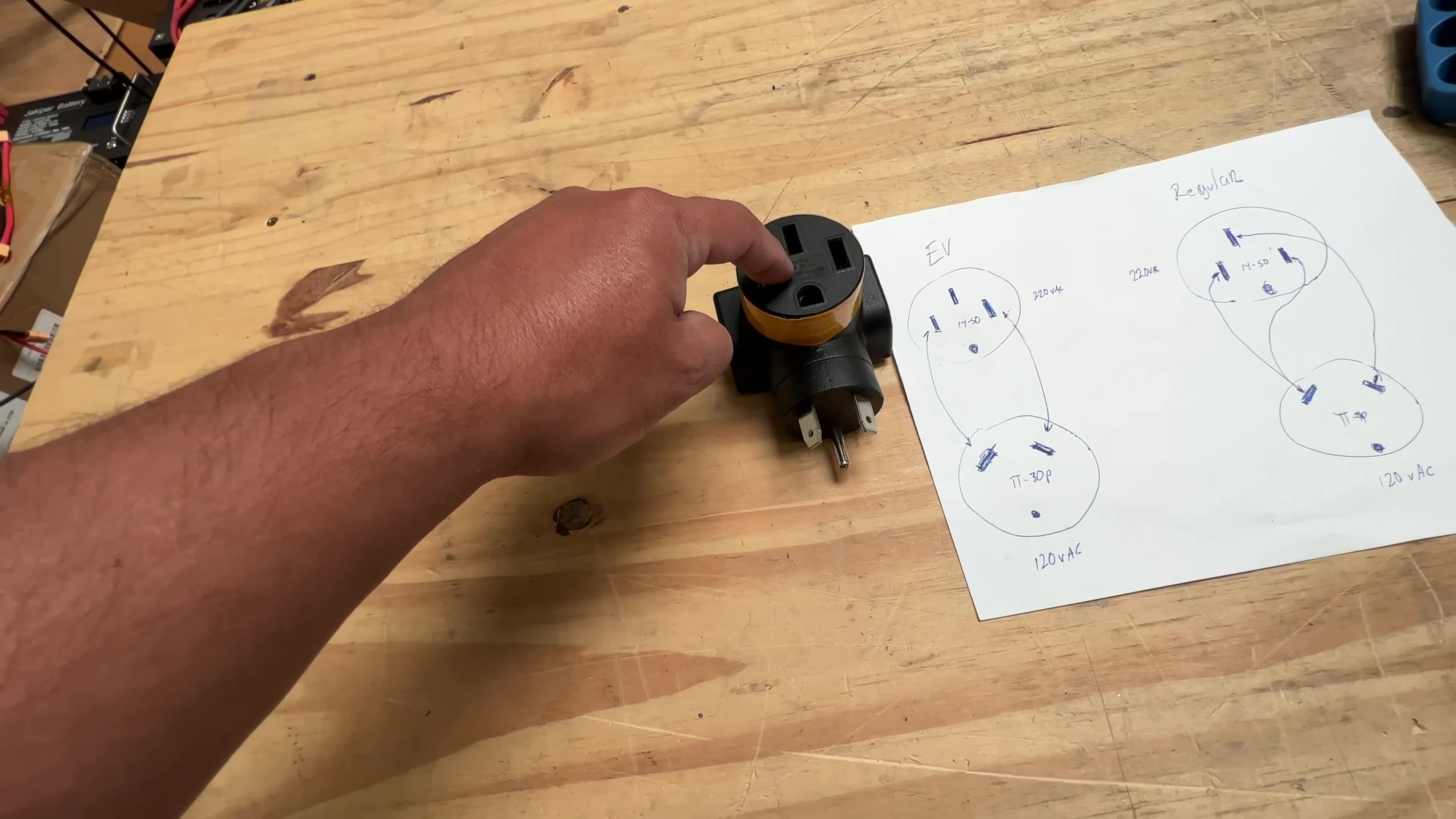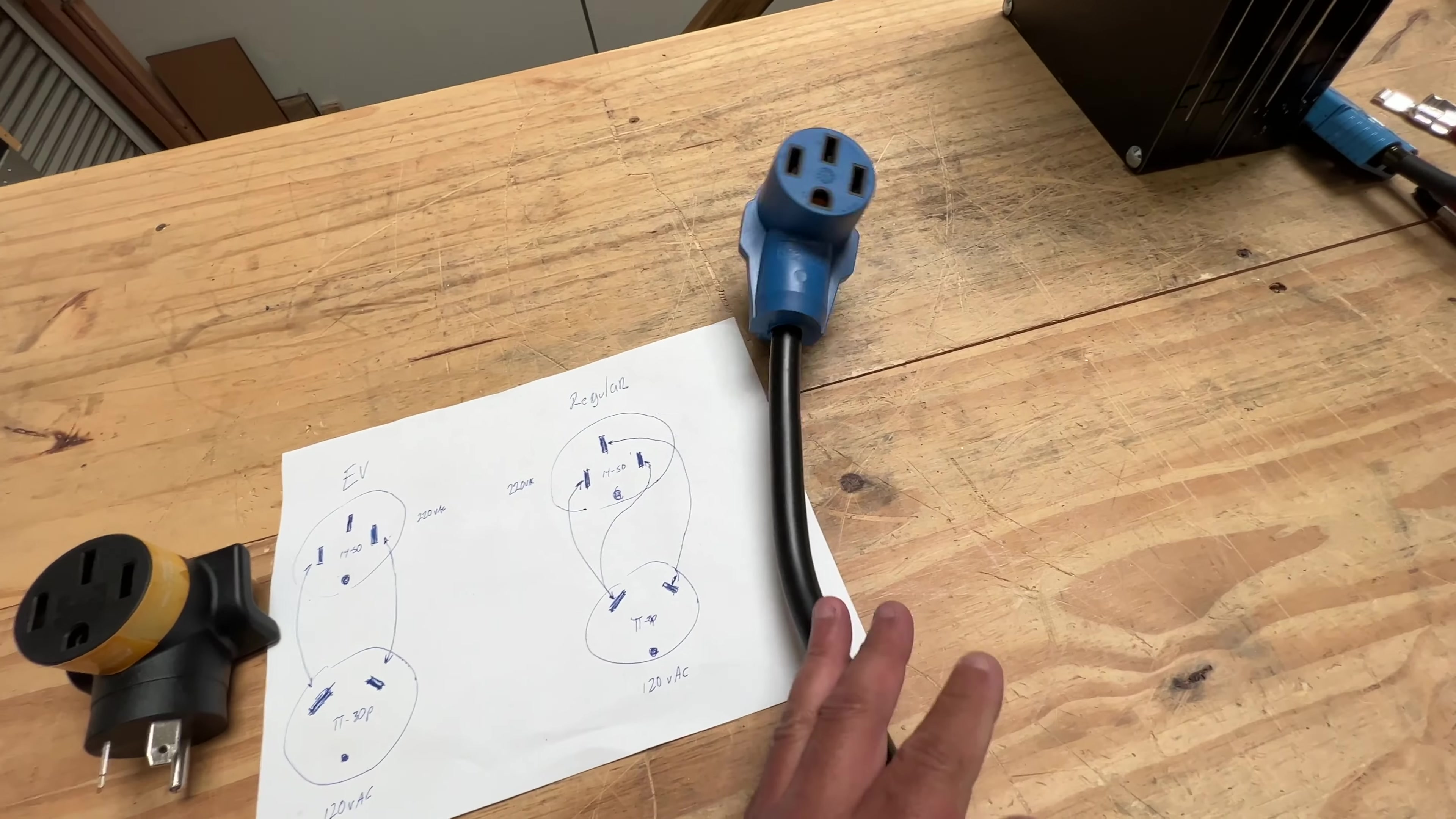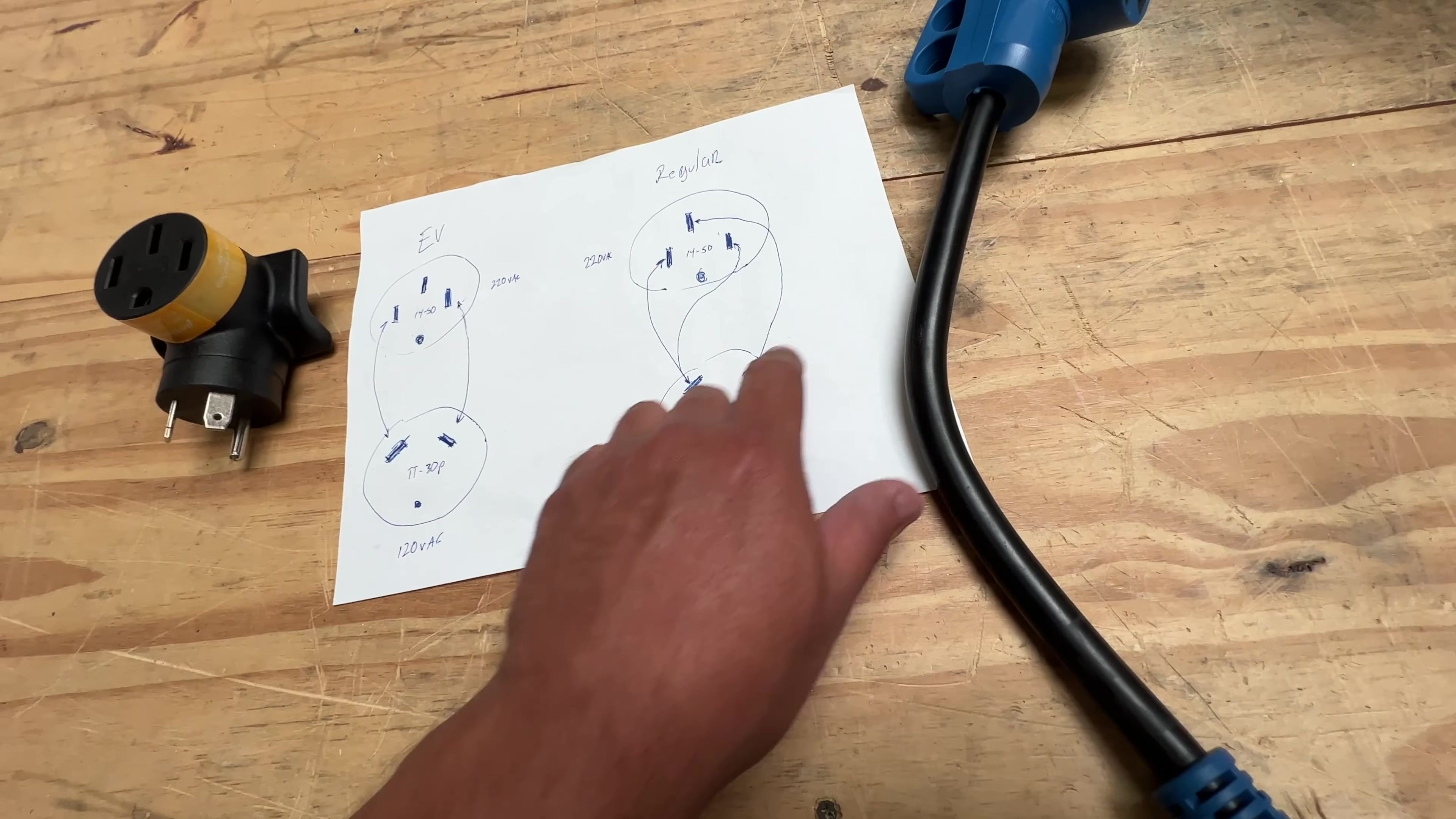If your device wants a NEMA 14-50 and you only want 120 at the hot legs, then you can use this—that's the common use for the EVs. Now this one here is the regular adapter that you can buy at Home Depot and other places. It's essentially the same thing except the wiring is a bit different.